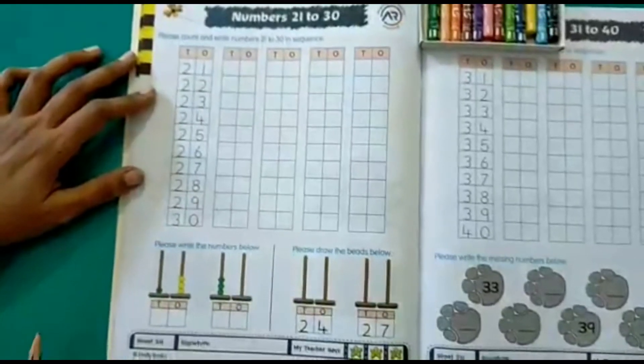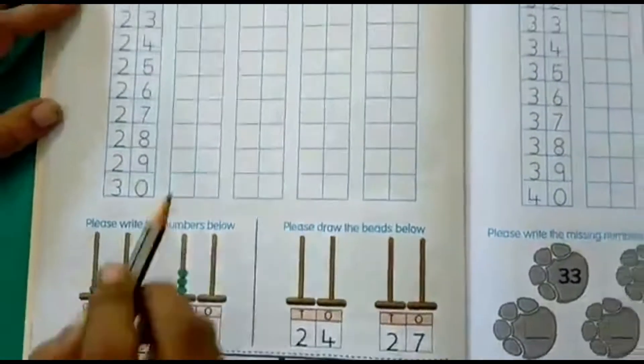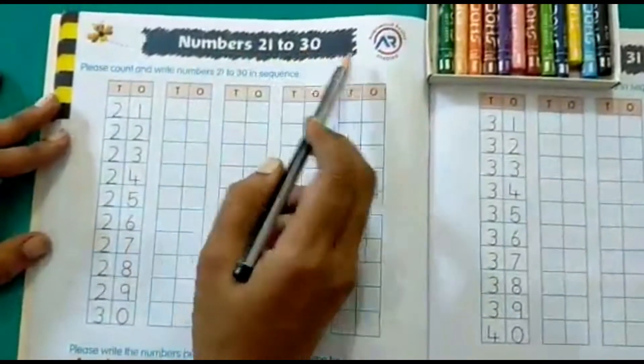Good morning children, now let's start with the Maths Worksheets. So children, now today we will do the worksheet, page number 24, numbers 21 to 30.